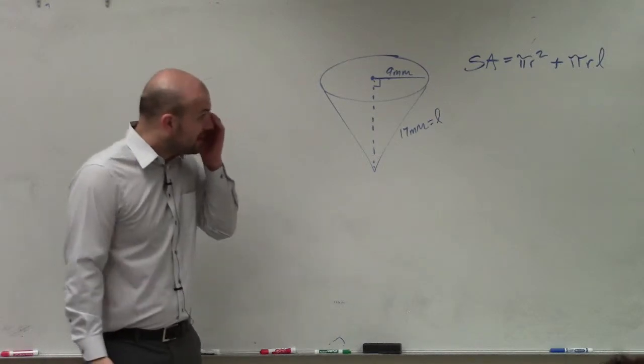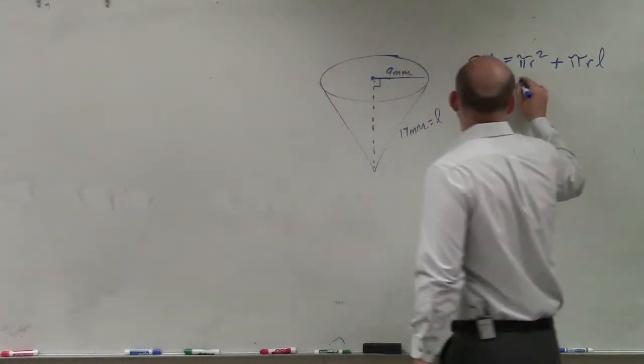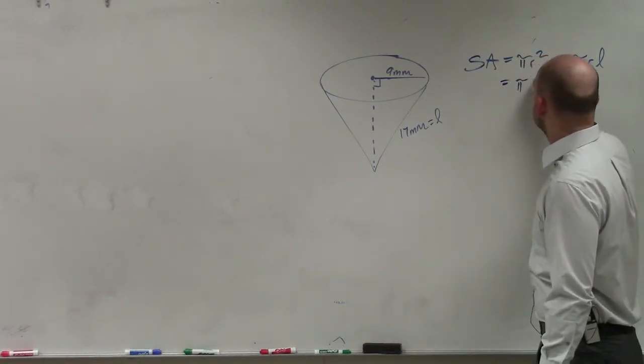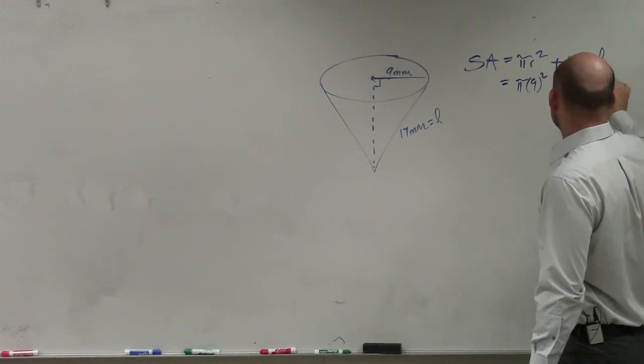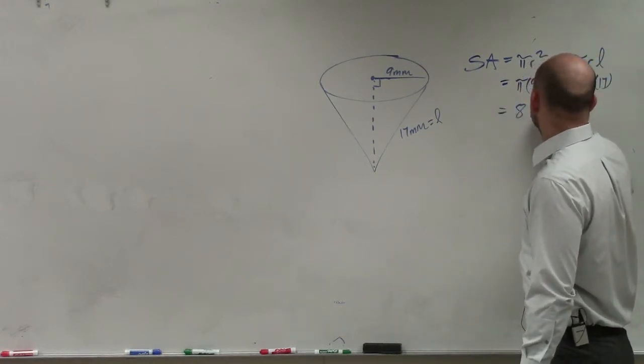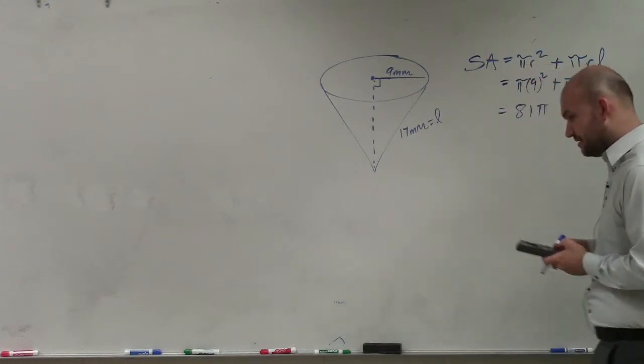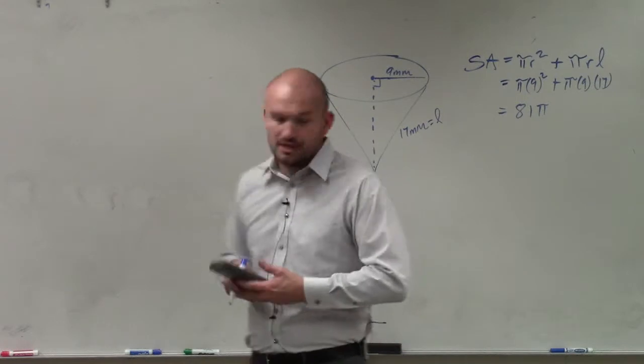So now I just take that information and I plug it into my formula. So I have pi times 9 squared plus pi times 9 times 17 equals 81 pi. 9 times 17, I guess I could do that would be 63, 90, 153.